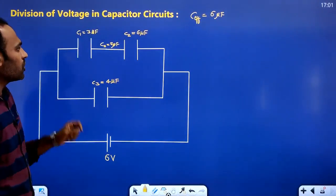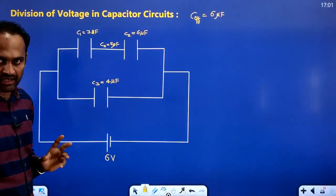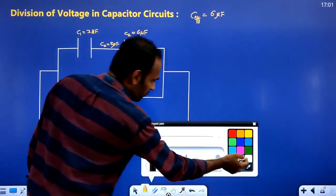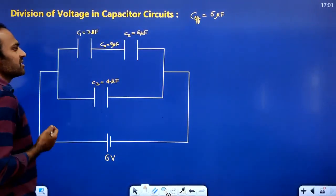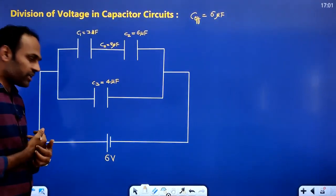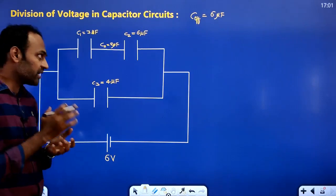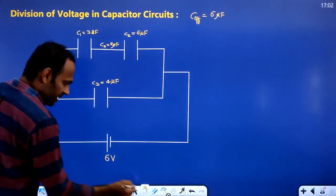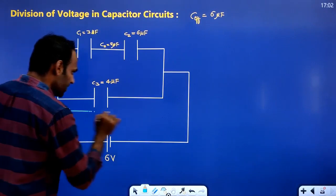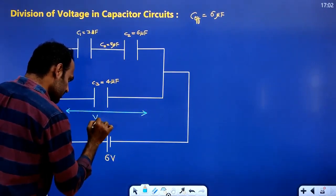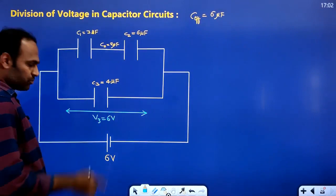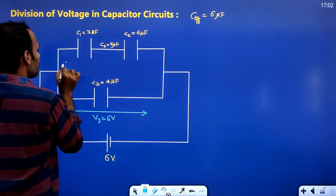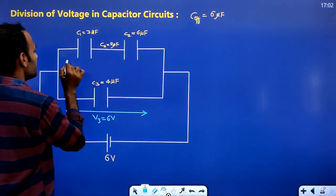We want the voltage and charge across each capacitor. Total applied voltage is 6 volts. The third capacitor is in parallel with the series combination, so the full 6 volts appears across C3 and across the series combination. V3 equals 6 volts. Q3 equals C3 times V3 equals 4 times 6 equals 24 microcoulombs.